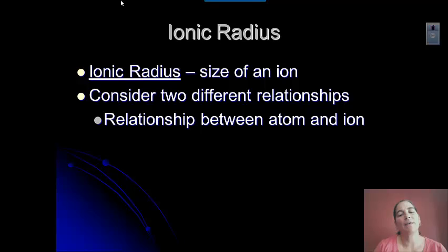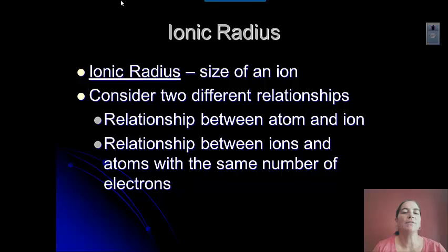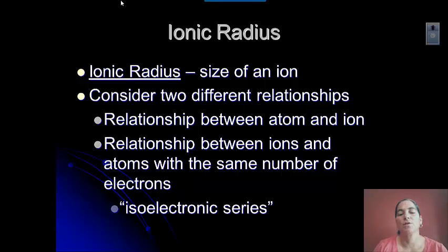So one of them is the relationship between the atom and the ion. An atom and ion of an element would have the same number of protons but different numbers of electrons. And then we also have to think about atoms and ions that have the same number of electrons, so they may have different numbers of protons.